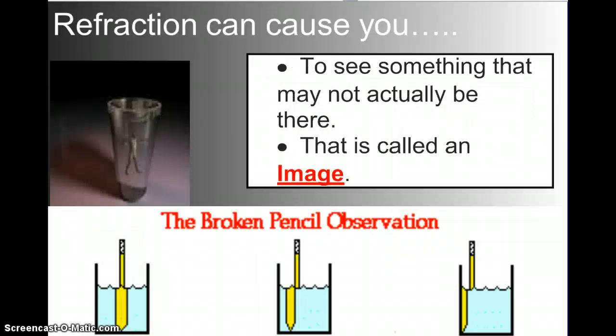The classic example of this is the broken pencil. So you put the pencil in water and it looks like it got bigger, but it didn't really get bigger. Or you move it to the side and it looks like it's way over to the side, but it didn't really do that. So what is happening? It's called an image. When we see something that may not actually be there. And this happens when light changes its speed. It changes what we're seeing. It's called refraction. Light is being bent.